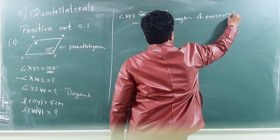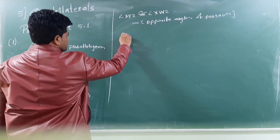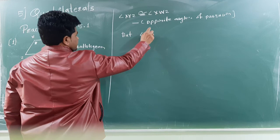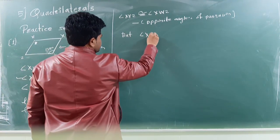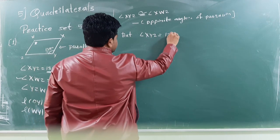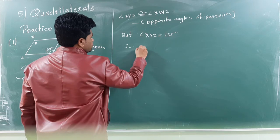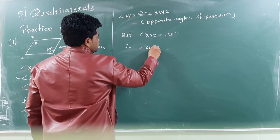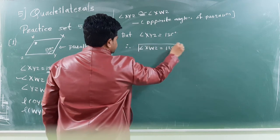Okay students, this property should be written in your question answer as well. But, we know here, angle XYZ, we have known here. When XYZ is 135, that is why we can write as, angle XWZ will be equal to 135. And, this is the first answer.